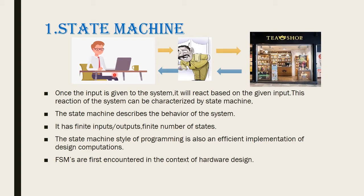For example, consider a manager in an office who has a peon, and nearby there is a tea shop. Whenever the manager feels tired, he gives instructions to the peon to get a cup of tea. When the peon receives the instruction, he goes to the tea shop, gets the tea, and gives it to the manager. This process can be characterized by a simple State Machine, which consists of a finite number of inputs, outputs, and states — that is why we call it a Finite State Machine.